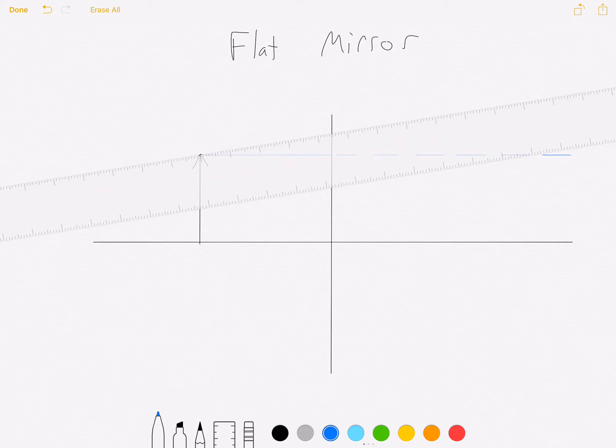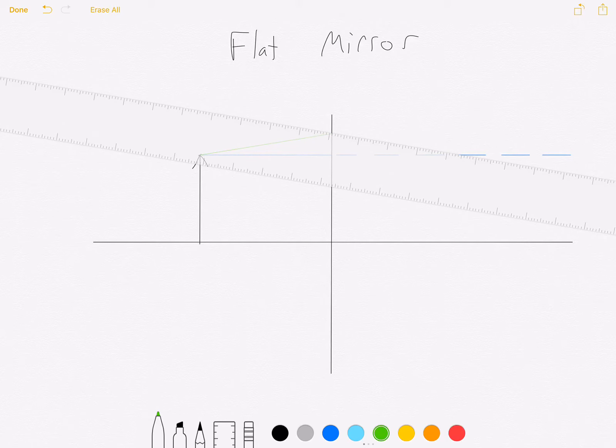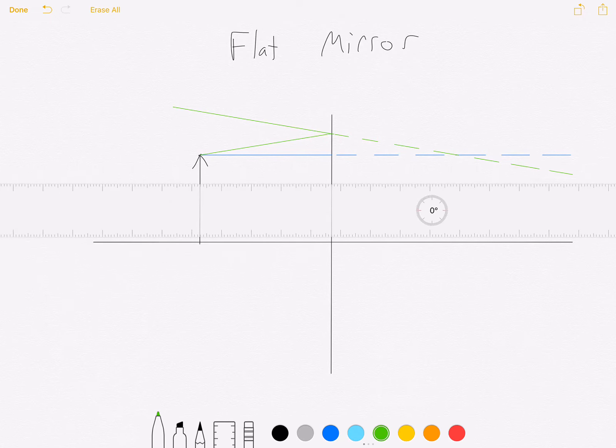We're going to draw another ray sort of upward at a 10-degree angle, and it's going to reflect off at 10 degrees, because the incoming ray and the outgoing ray have the same angle. Again, backtrack, because flat mirrors always form a virtual image.